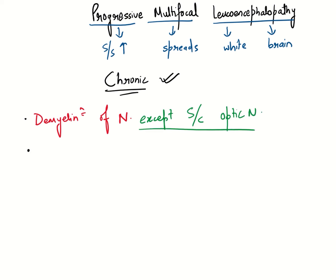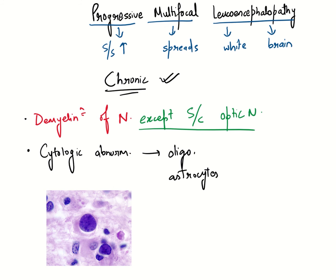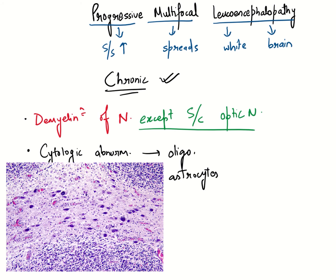You will see cytologic abnormalities in oligodendrocytes and astrocytes. Here's an image showing the different changes. In oligodendrocytes, the cells will be enlarged and they will have these intracellular deposits, while in astrocytes they also will be enlarged along with hyperchromatic nuclei and abundant mitotic figures as you can see here.